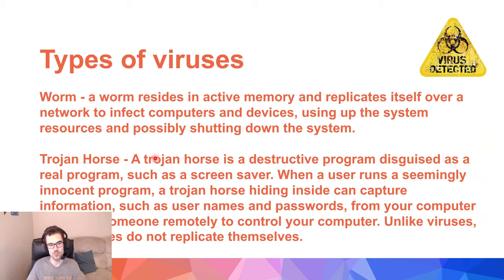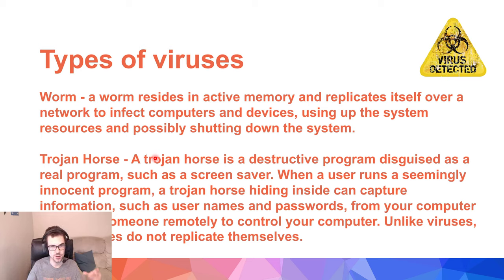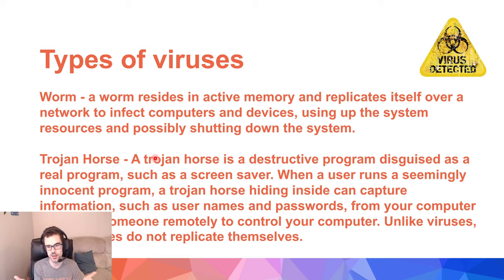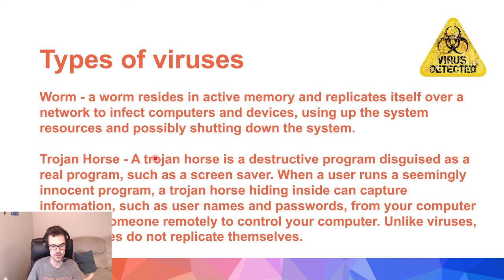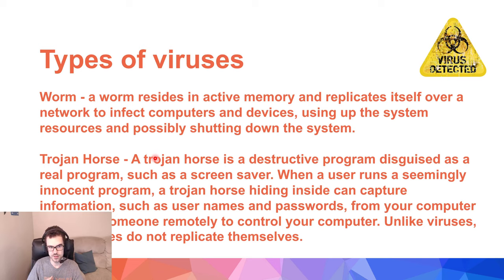A worm resides in the active memory of the computer and replicates itself over a computer network to infect other computers and devices. One computer gets it in its memory, and since the computer stays running, it starts replicating onto all the systems around the network. The fastest way to shut down this type of virus is to literally unplug the computer and unplug the Ethernet cord. If you take it off the internet and turn it off, the attack usually stops.